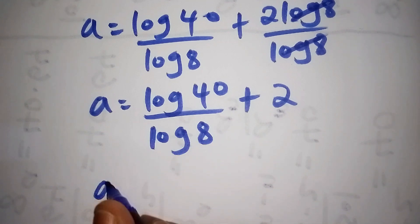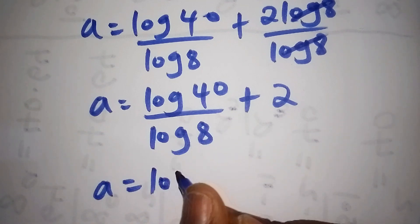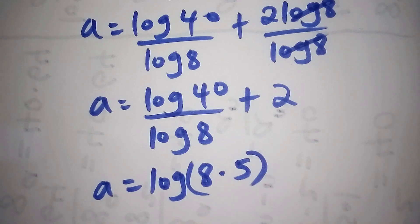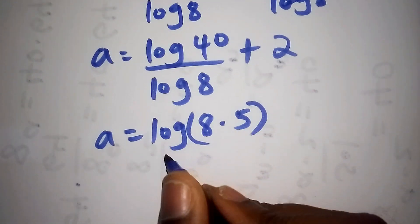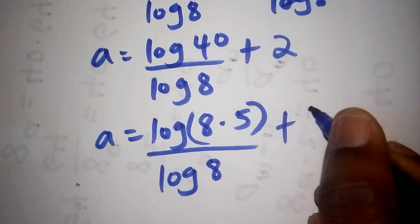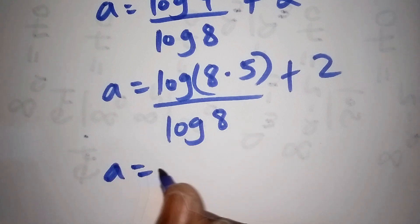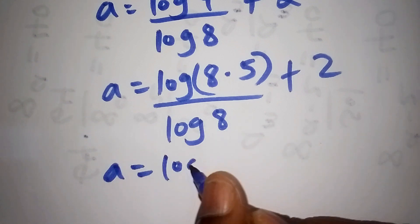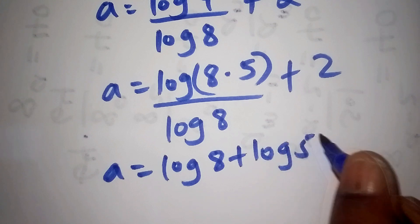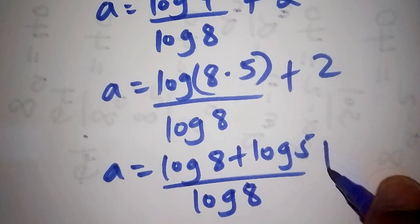When we simplify the log 40 part, log 40 can also be written as log of 8 multiplied by 5. Then all over log of 8. So this becomes log 8 plus log 5, all over log 8, plus 2.